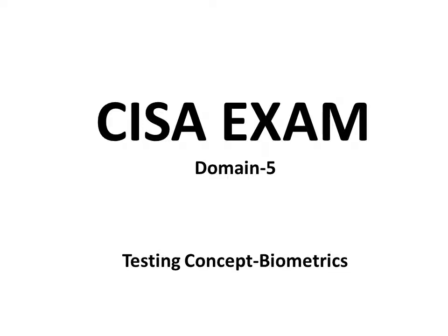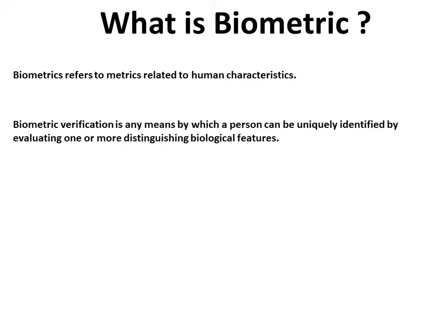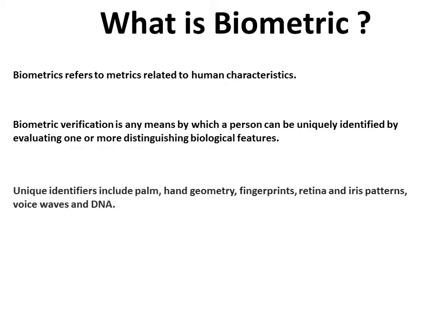In this video we will learn about biometrics. Biometrics refers to metrics related to human characteristics. A person can be uniquely identified by evaluating one or more biological features. It includes palm hand geometry, fingerprints, retina, iris patterns, visors, and DNA.